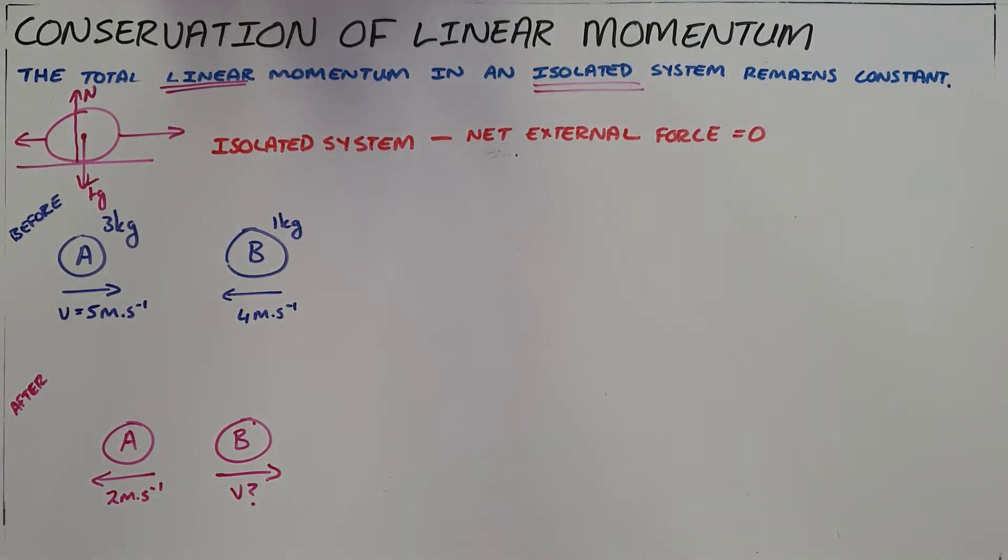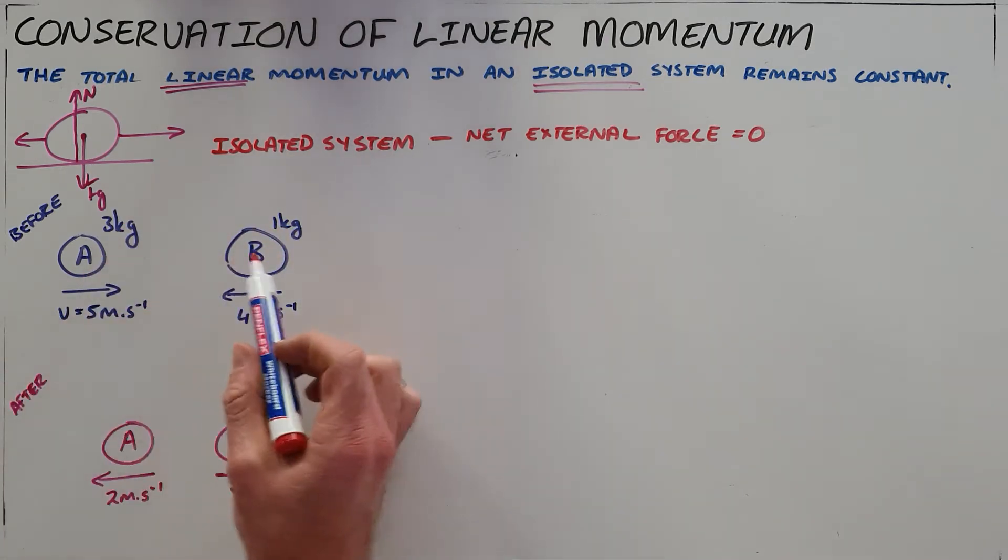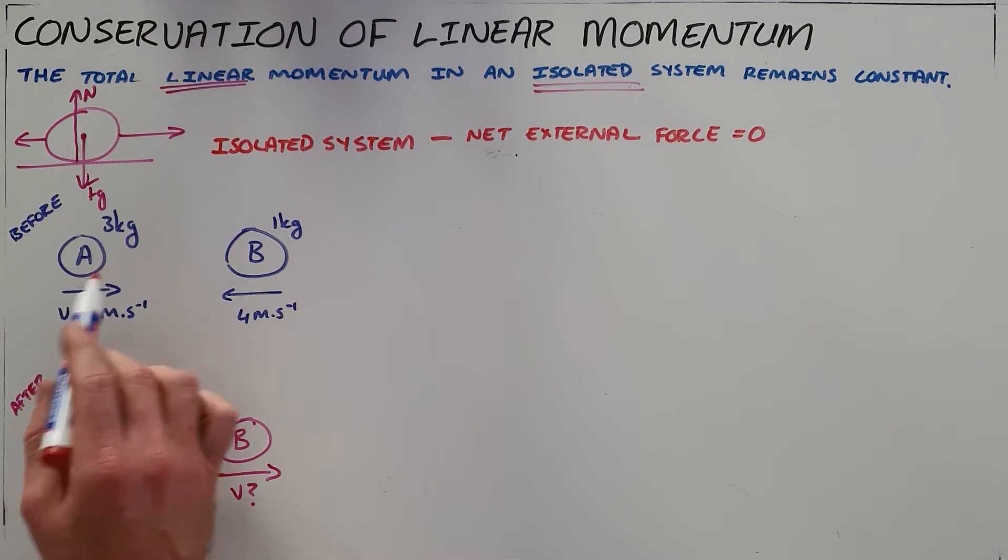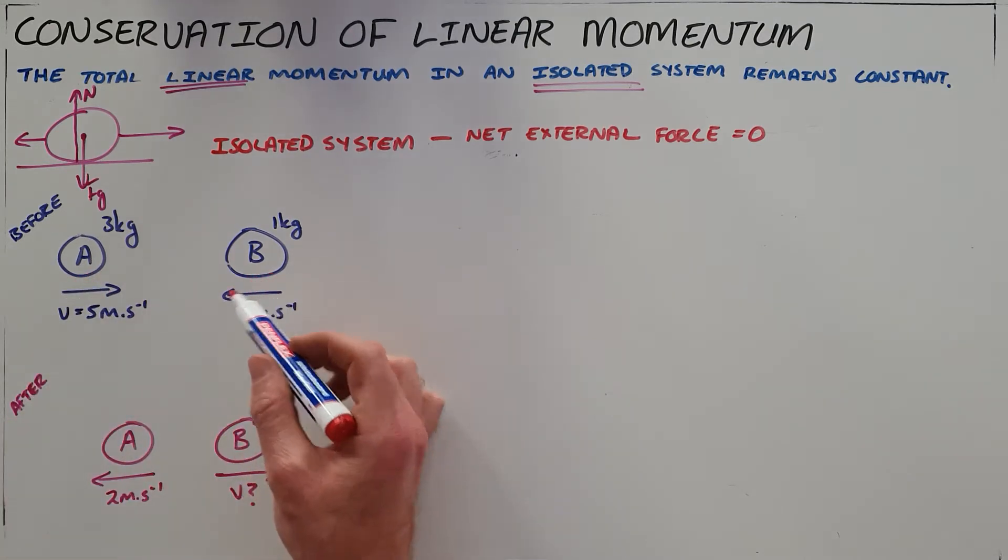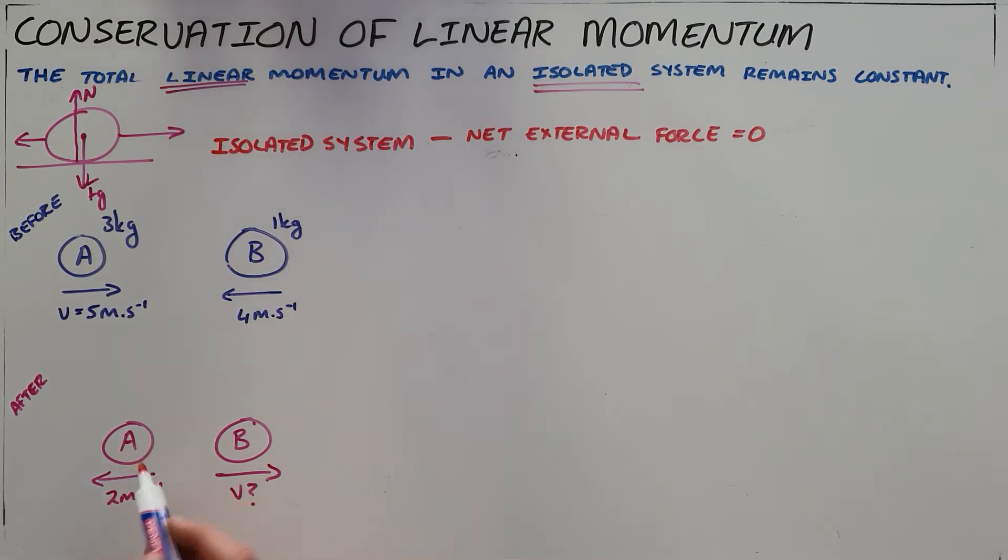A common example of where this principle would be used is drawn here, where we can say that two objects with separate masses are initially traveling towards each other. They then collide with each other and move off in opposite directions, and we are given the velocity of object A and we do not know the velocity of object B.